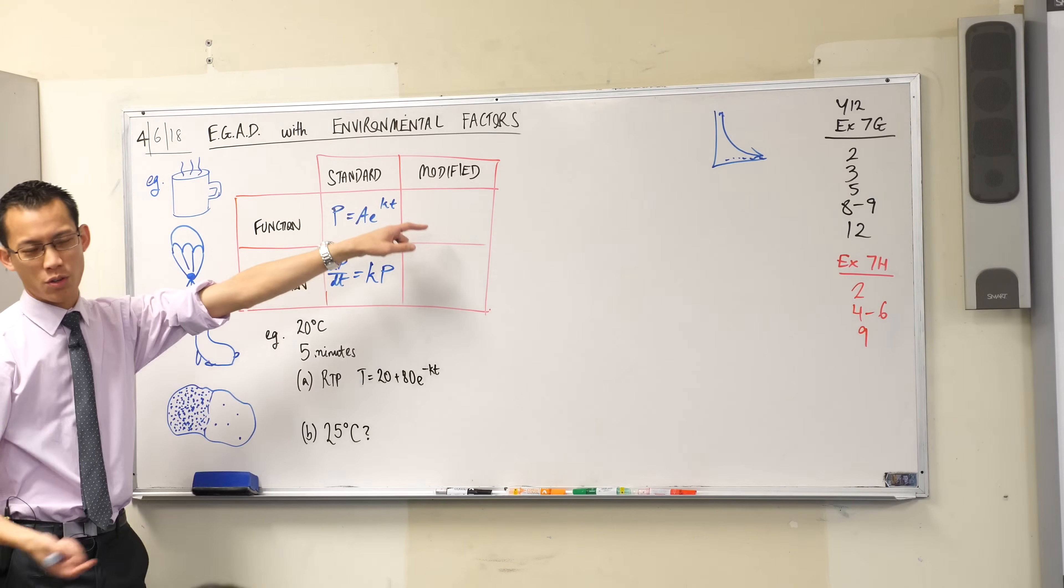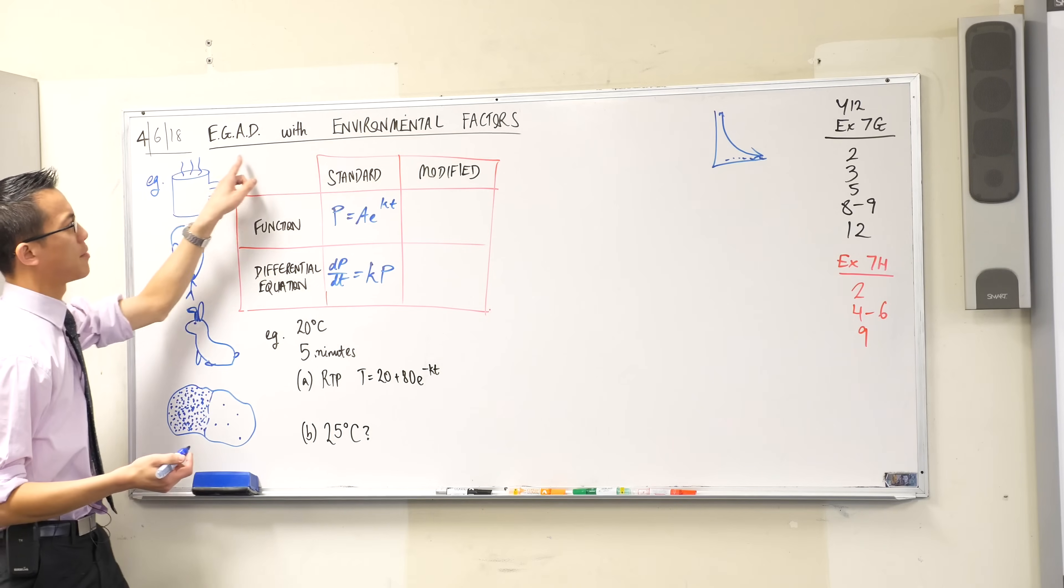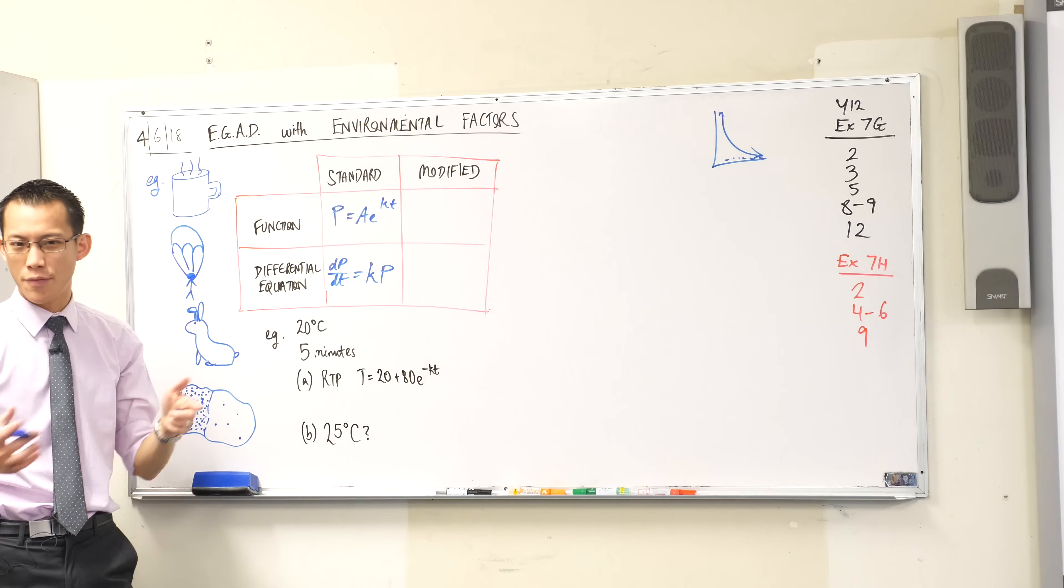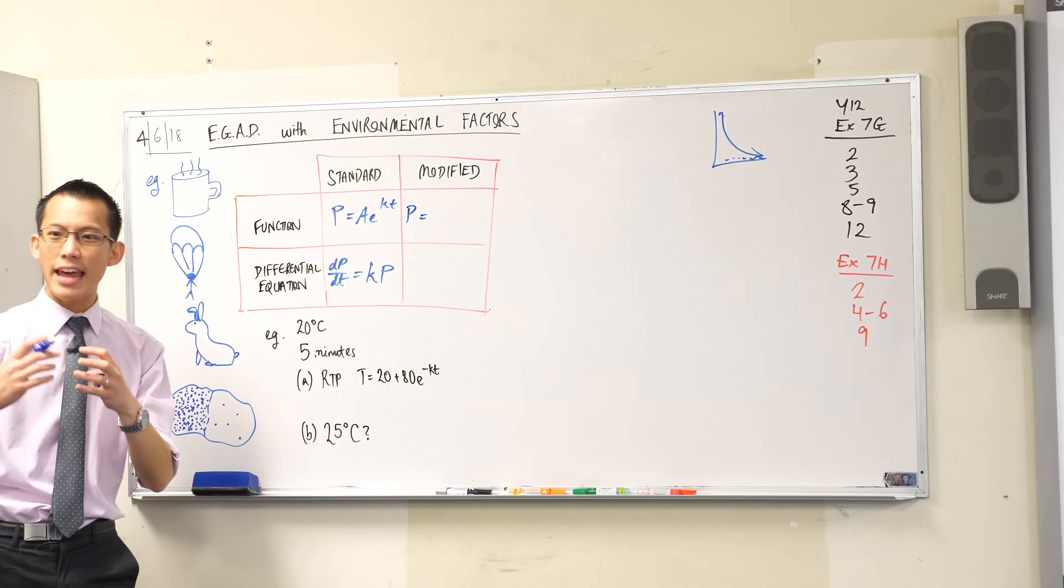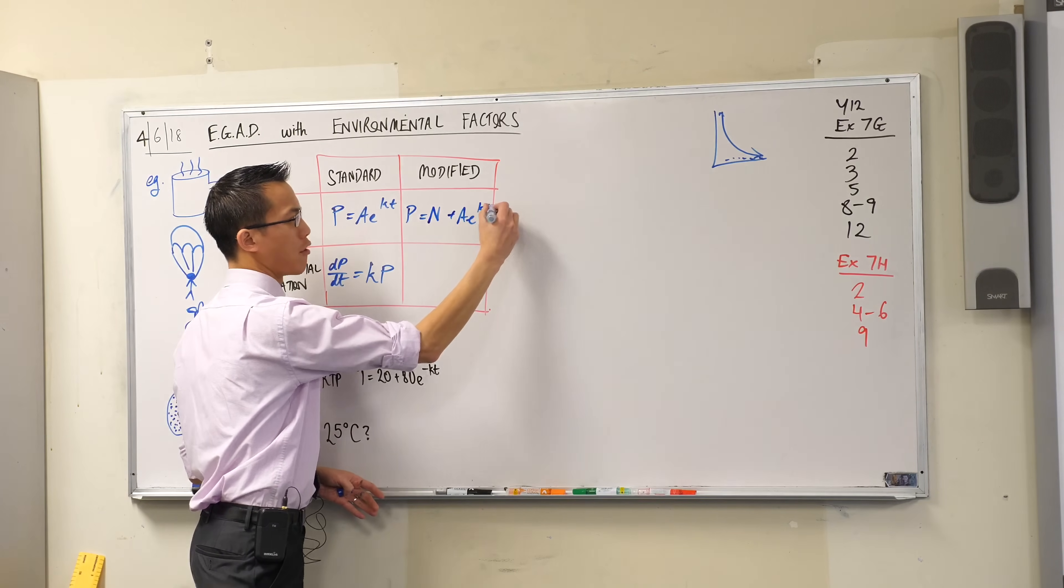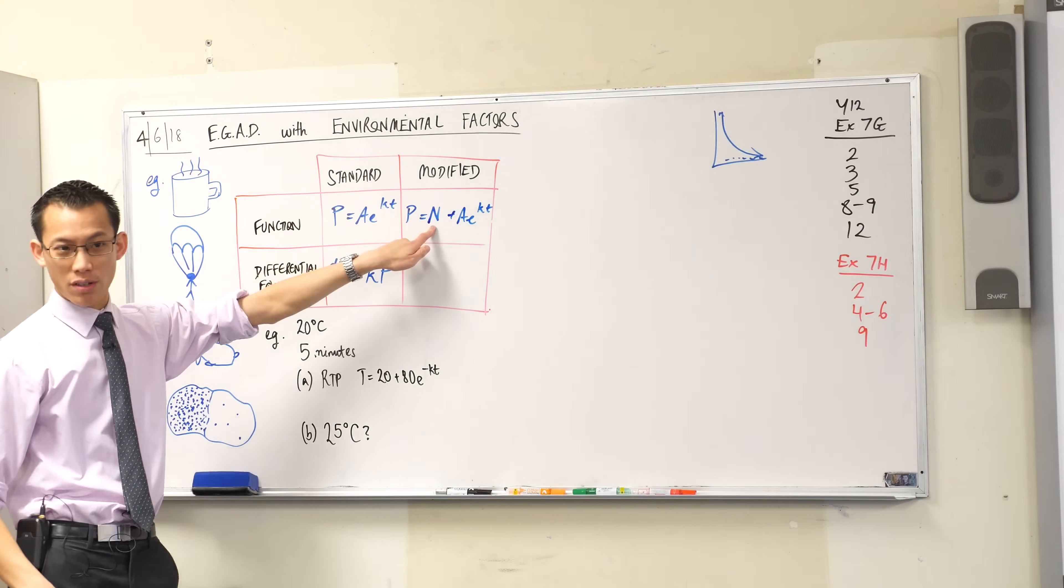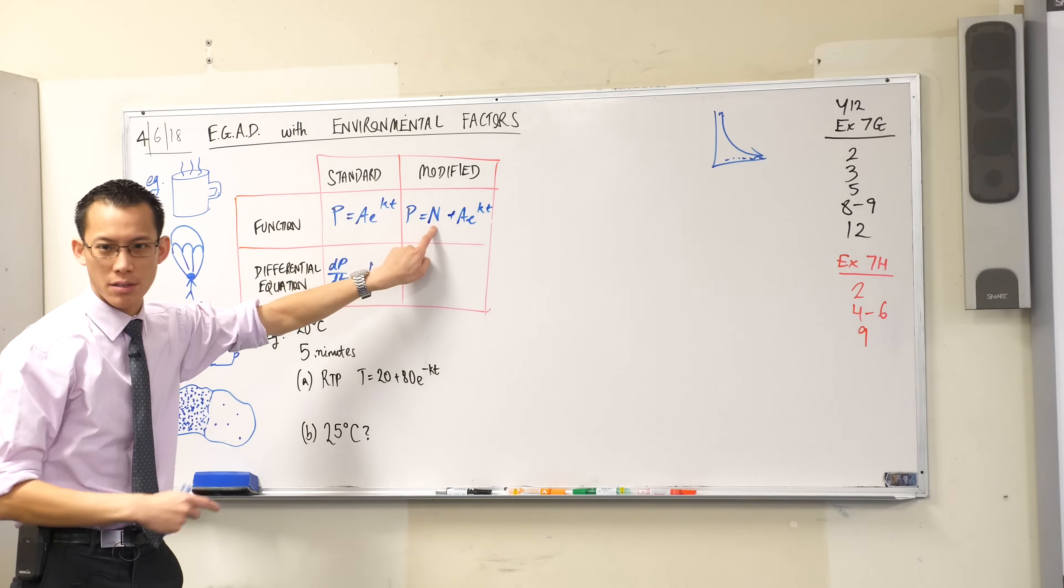What we have is what the textbook calls modified exponential growth and decay. The difference is that you're going to have an extra number in here, we would call it M, it's just a constant that offsets your exponential growth or decay. There's just an extra constant there that raises or lowers the graph.